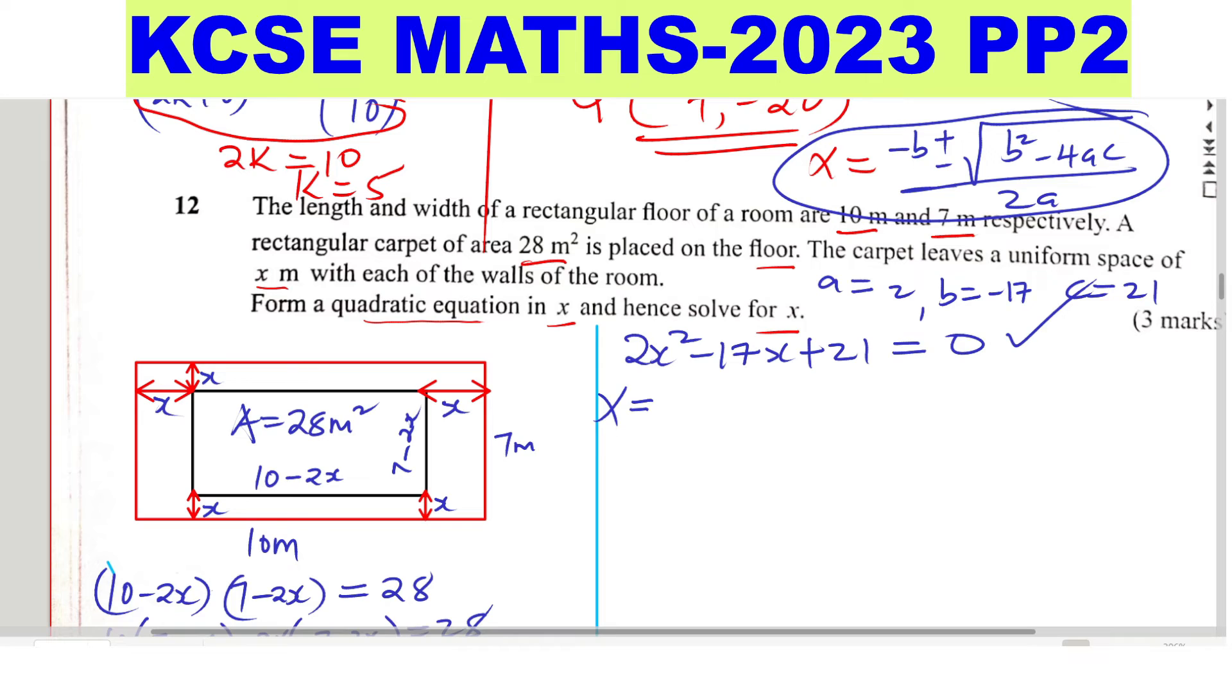So x will be given by negative b will be 17 plus or minus b squared will be 17 squared. We'll just go directly. b will be negative 17. So b squared substituting there will be 289 minus 4 times a, that is 4 times 2 times c, which is 21. That will give 168.